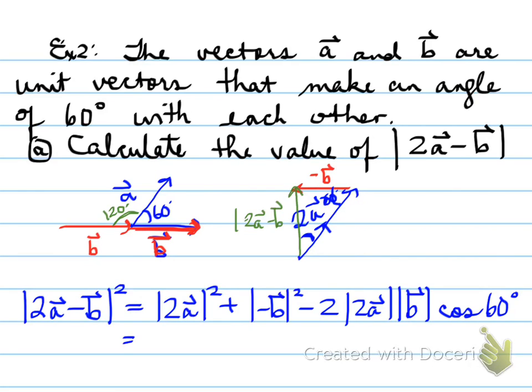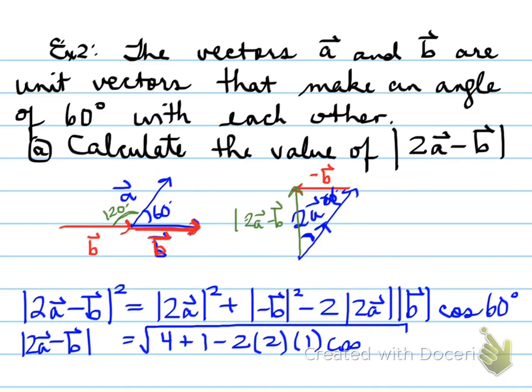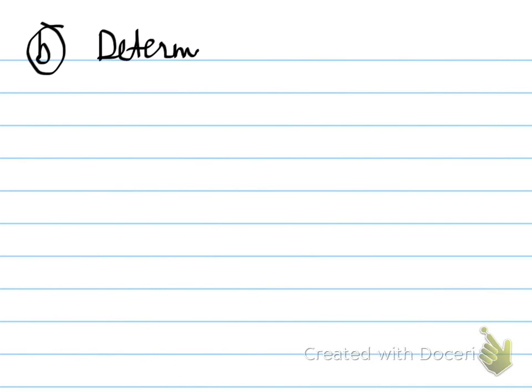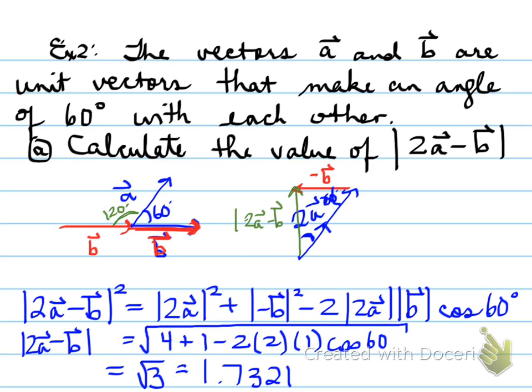Cosine law: you know that vector a is a unit vector. Unit vector means it has a length of one. So 2a has a length of two. B has a length of one. So you would have two squared, which is four, plus one, minus two times two times one times cosine of 60. You end up with an answer root three, and that equals the length of 2a minus b, which is what we're trying to find. The value of the length of that will be 1.7321.